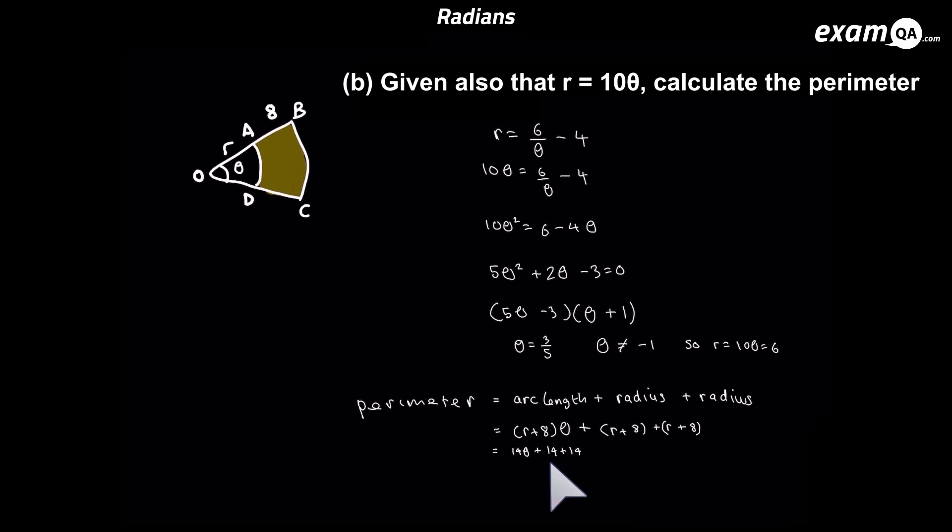Now we know that r is equal to six because we worked that out. So the radius can be replaced with 14. So let's go and replace every r plus 8 with 14. And we can also replace the theta with 0.6 or 3 over 5. Now it's just a matter of putting it into your calculator, or you can simply do it in your head because it's not too difficult. And we get the perimeter to be 36.4.